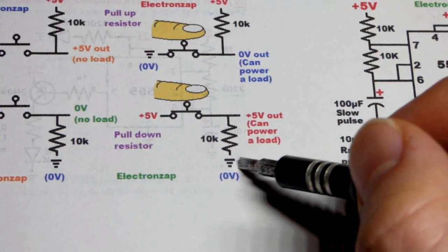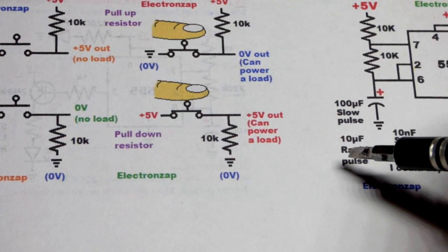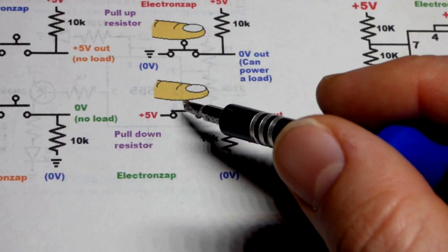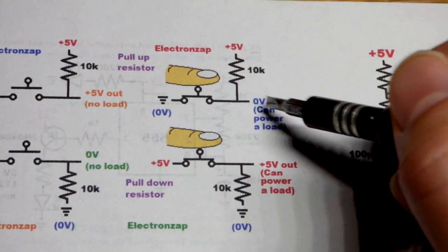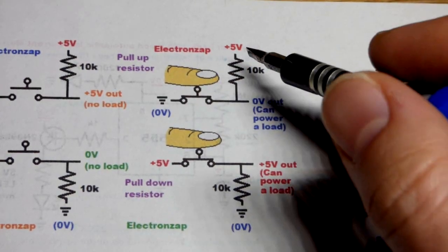And it just goes through that path right there. That load would have to limit current to a safe level. That's the pull-down resistor. The voltage goes up when you close the switch. Pull-up resistor keeps the voltage up to 5 volts until you close the switch.